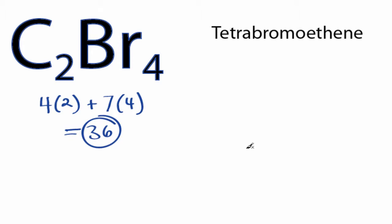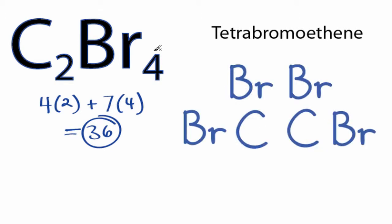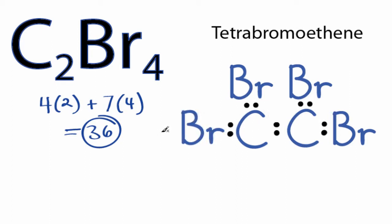Since carbon is less electronegative than bromine, we'll put the two carbons in the center, and then we'll put the bromines around it. So we have 36 valence electrons for C₂Br₄. We'll put two between atoms to form chemical bonds. We've used 10 valence electrons.